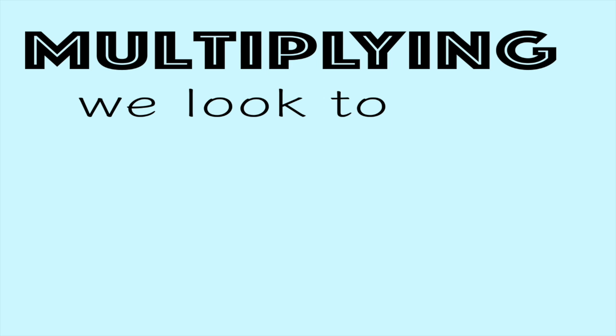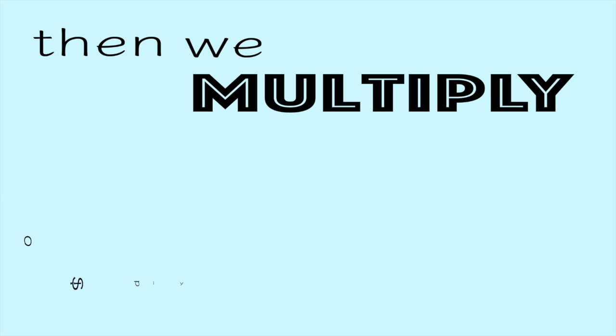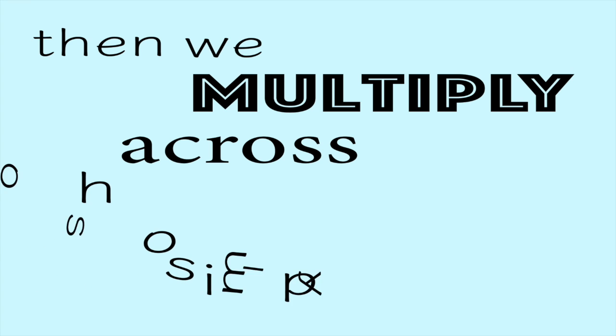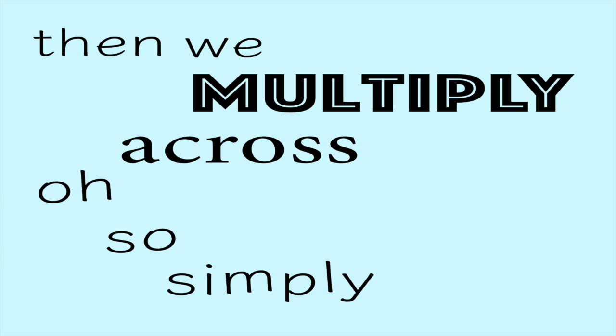Multiplying, we look to cancel diagonally. Then we multiply across, so simply.